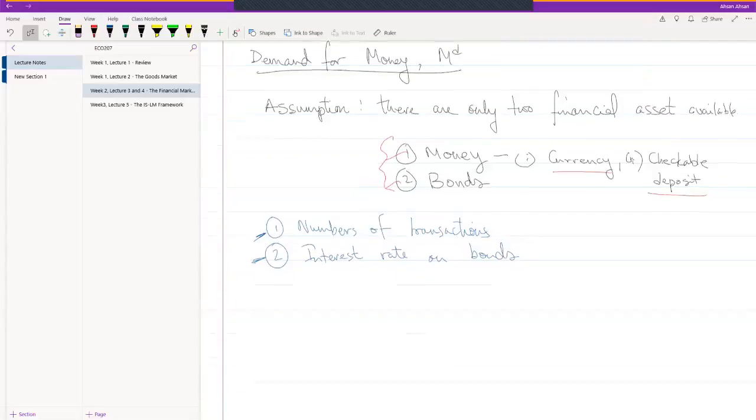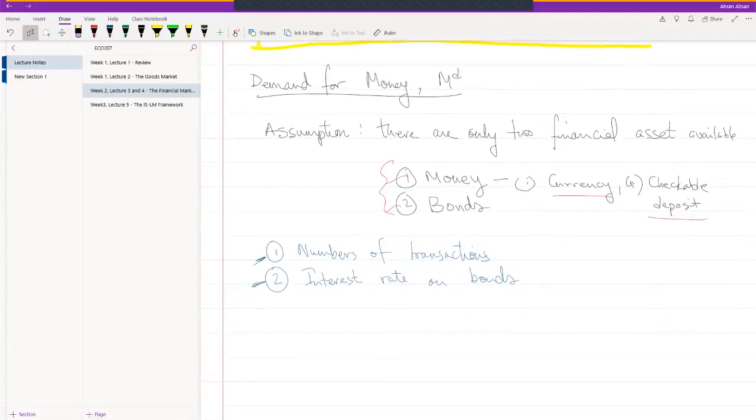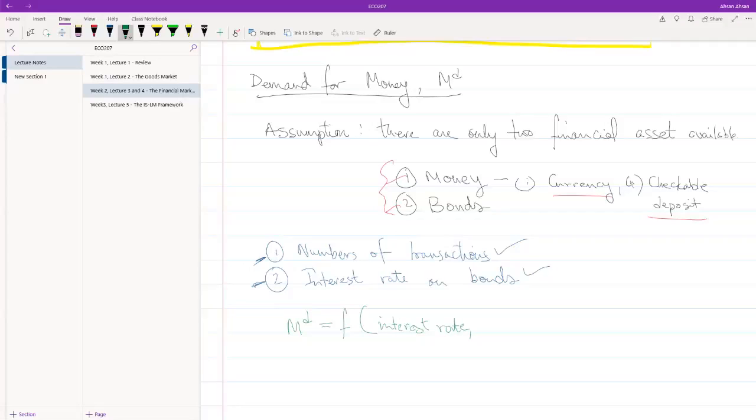Now that we have established what determines how much money we want to hold, which is the number of transactions or interest rate in bonds, let's try and calculate the money demand. There are two things basically that your money demand depends on. We have already talked about the interest rate. If the interest rate is very high, you don't want to hold a lot of money or currency, but if the interest rate is very low, you may be willing to hold a lot of it.